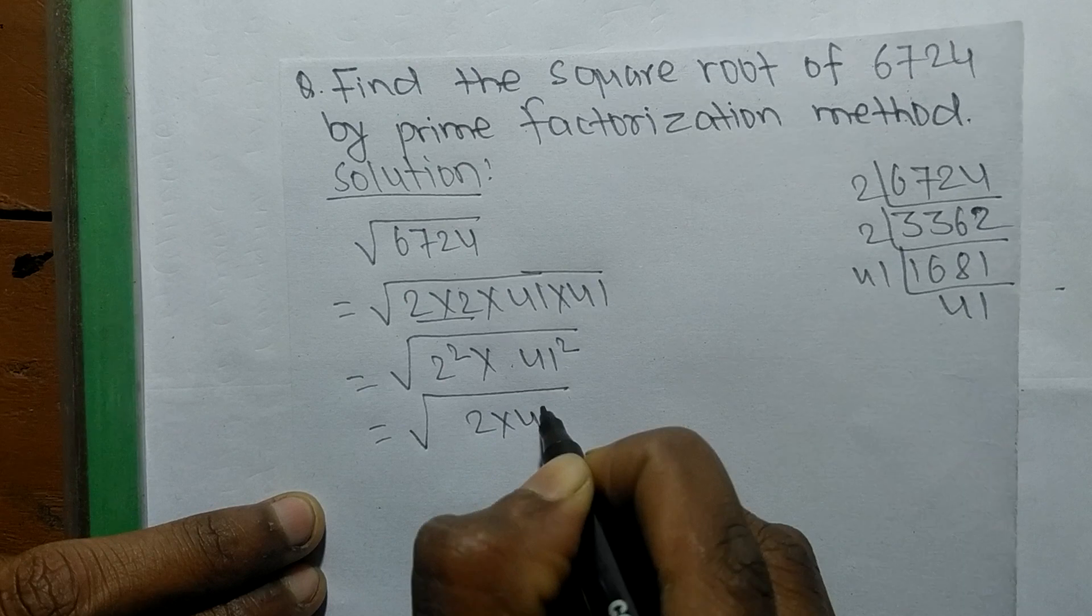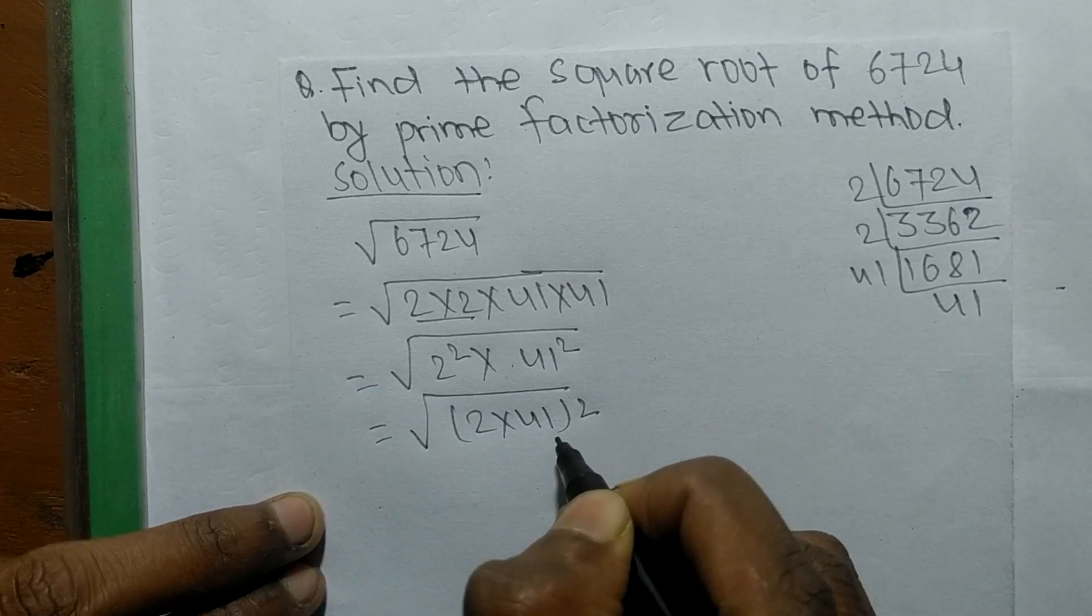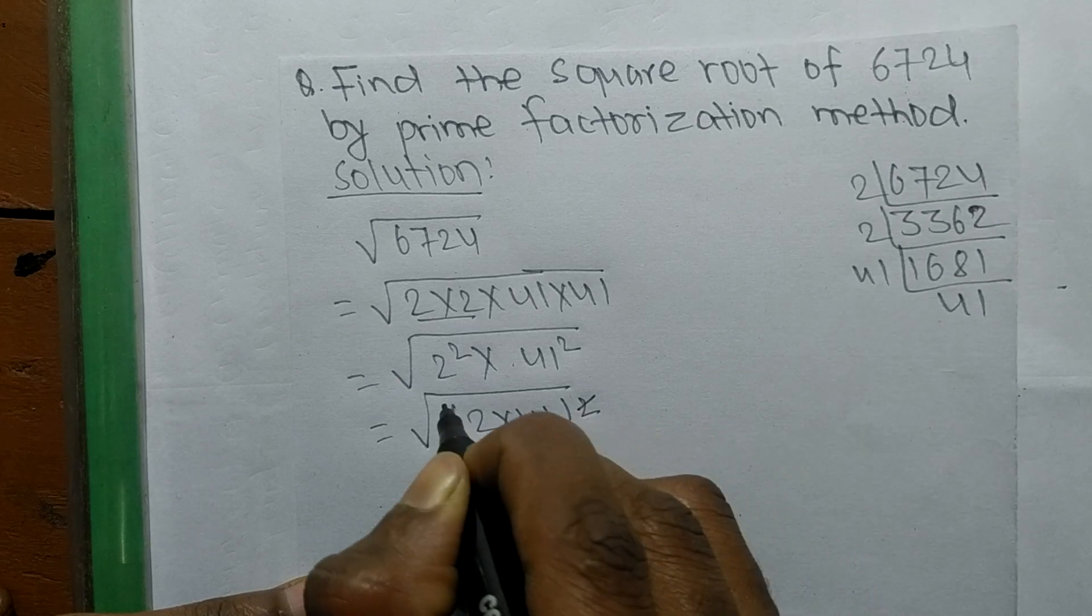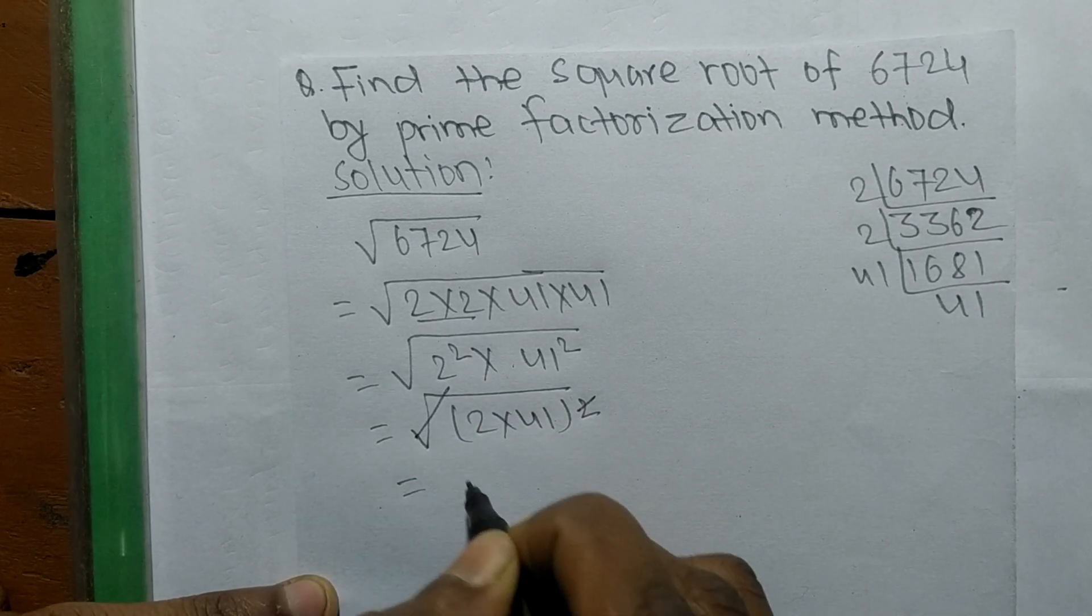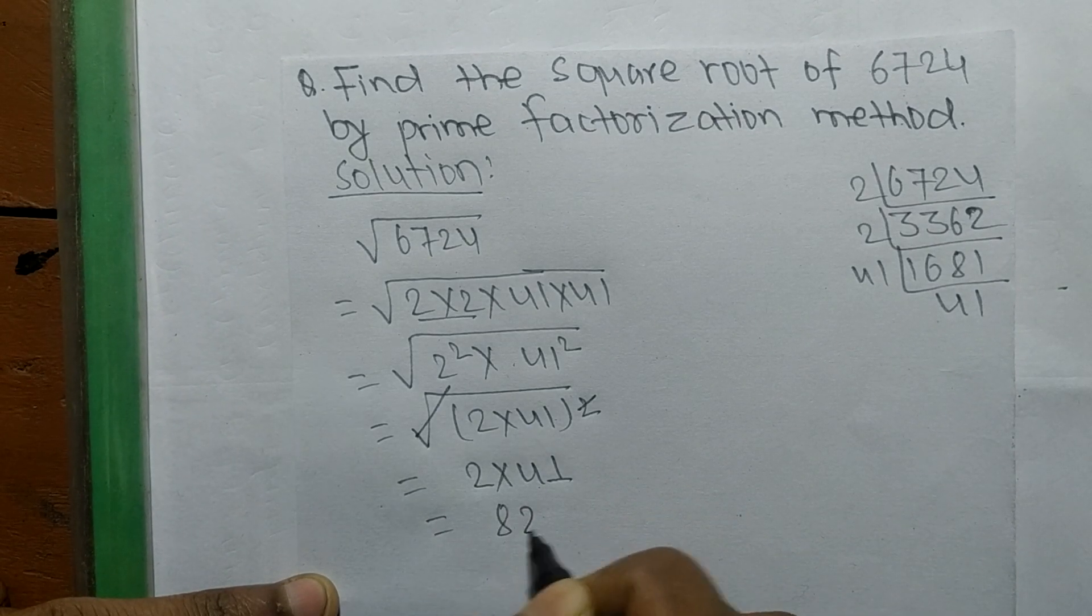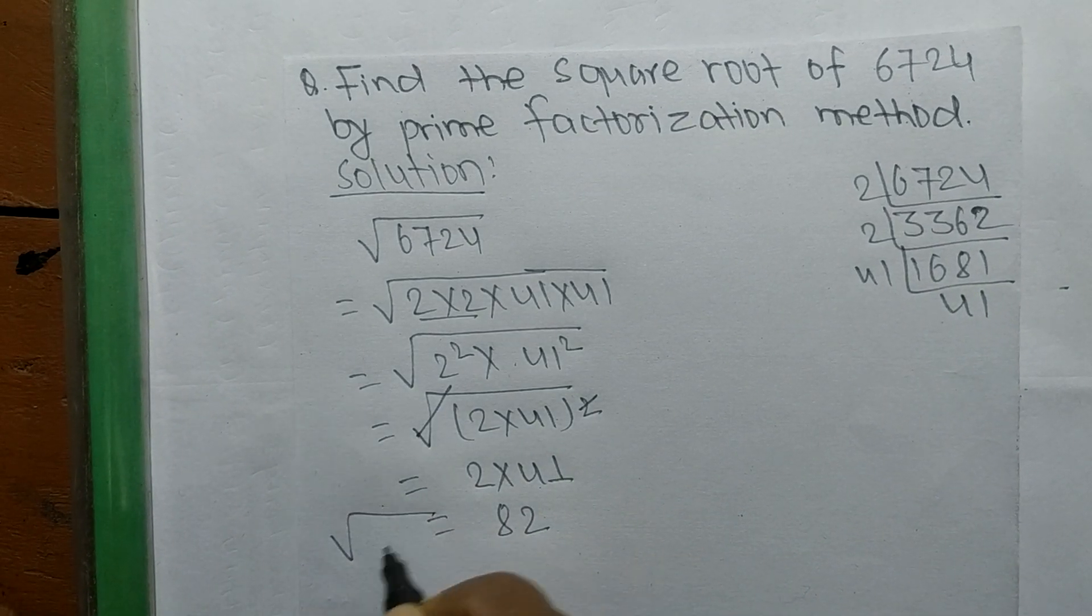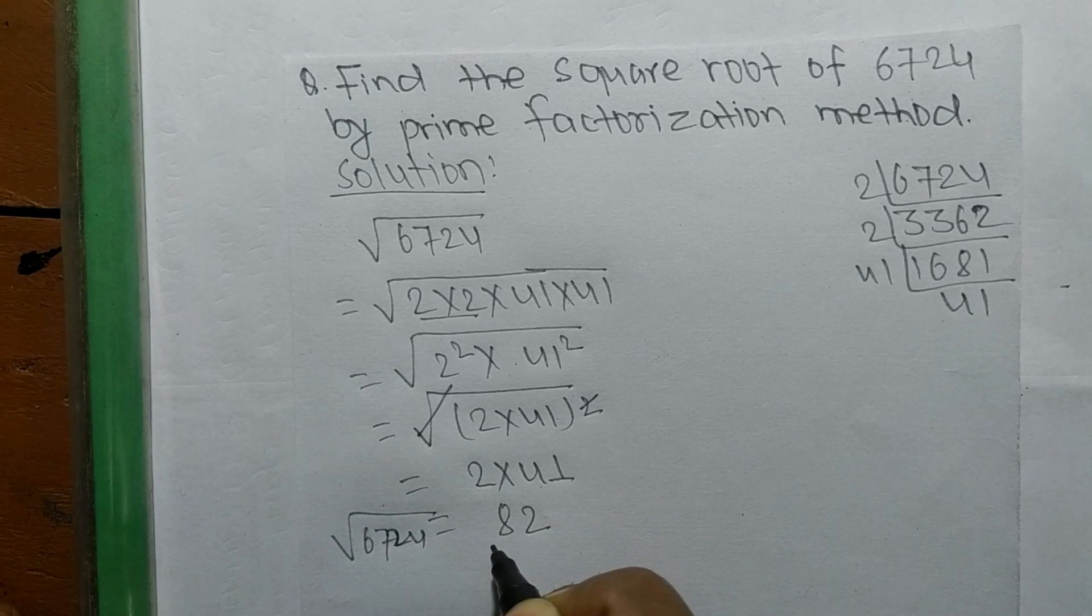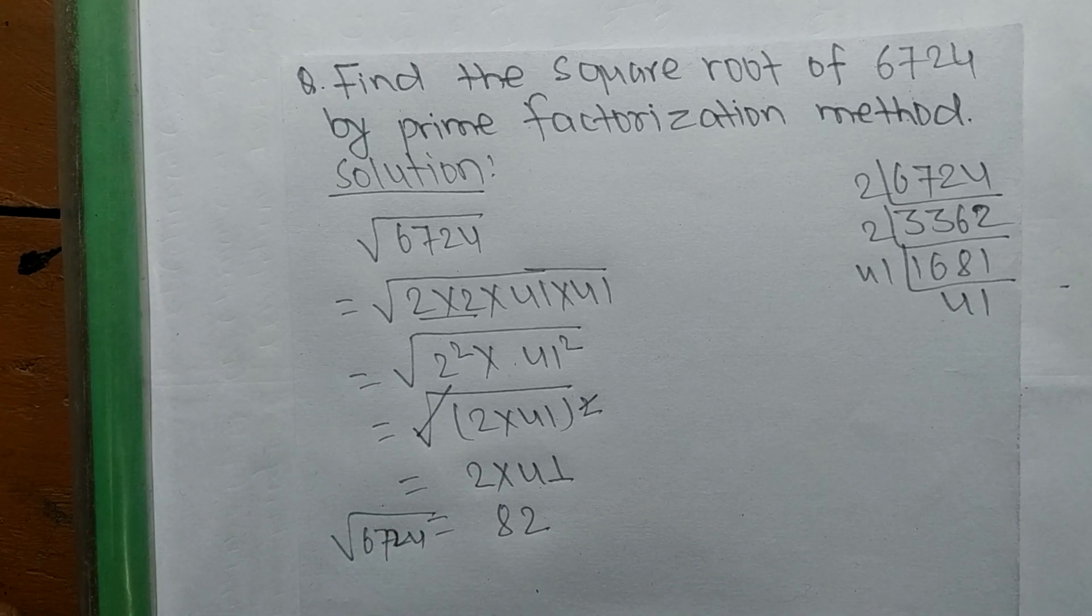We can write it as 2 into 41 whole squared. Square is present in both, so the squares cancel. Remaining is 2 into 41, which equals 82. So the square root of 6724 is 82.